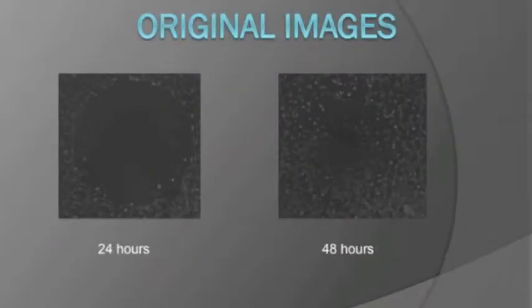Once the images at each time point of the cell migration have been taken, the images are analyzed using the ImageJ program. Using the data collected from the images, such as area and eccentricity of the wound, the rate of cell migration can be identified.